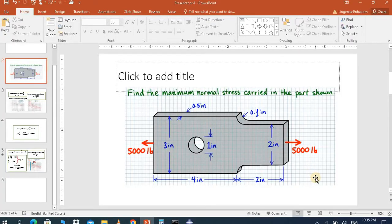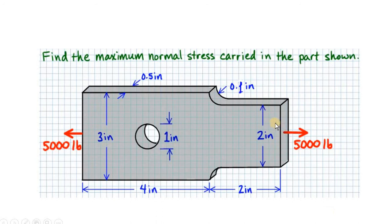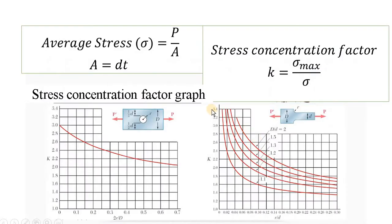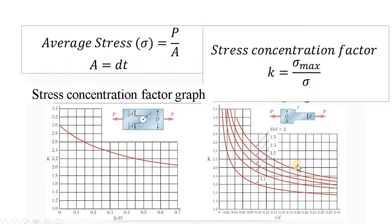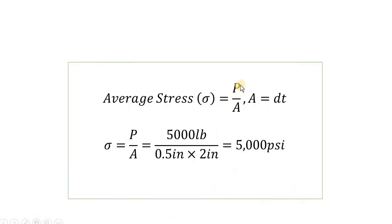Firstly, the hand calculation — let me show how we calculate this. The maximum stress is the force applied over the surface area, which is length times thickness. We have 2 inches and the thickness is 0.5 inch, so the area at this point is 0.5 times 2. Stress equals force over area, giving units of pounds per square inch.